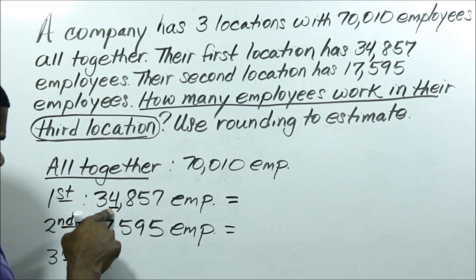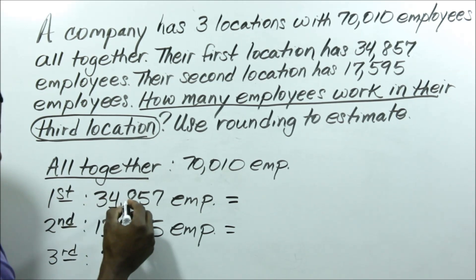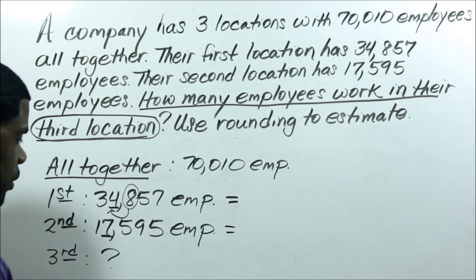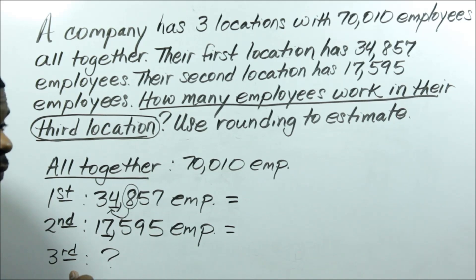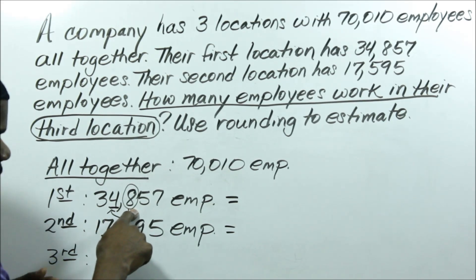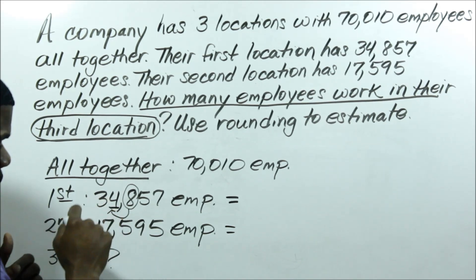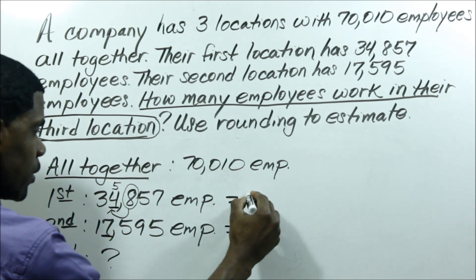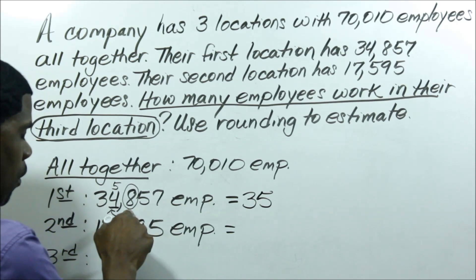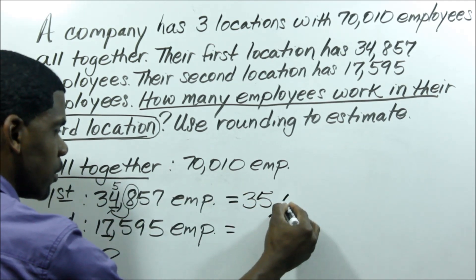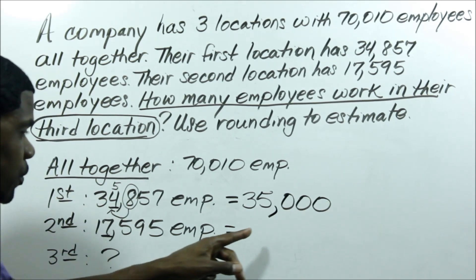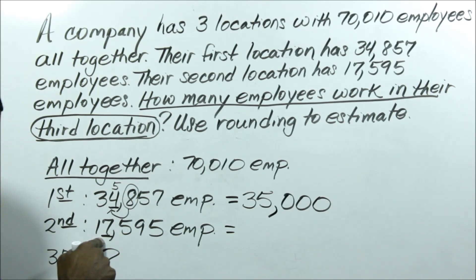I'll round to the nearest thousand. The digit in the thousands place is 4. The digit in the hundreds place will determine if I round up or stay the same. Since that number is 8, which is five or more, the thousands digit rounds up to 5. So 34,857 rounds to 35,000 to the nearest thousand.